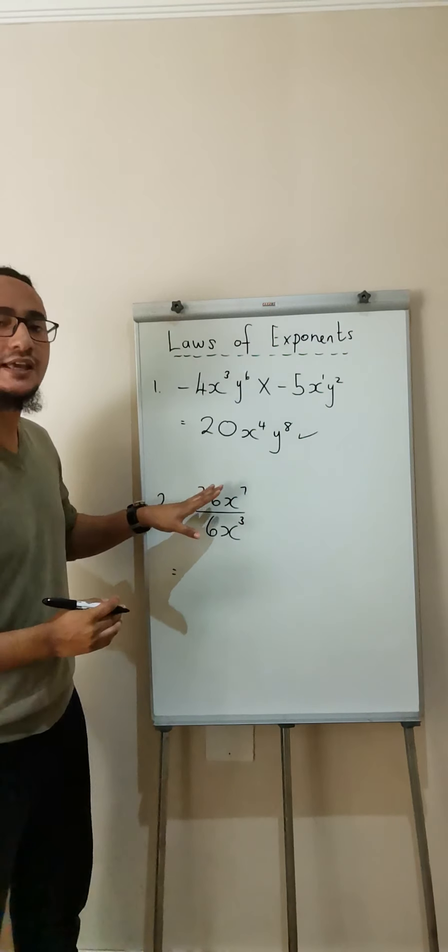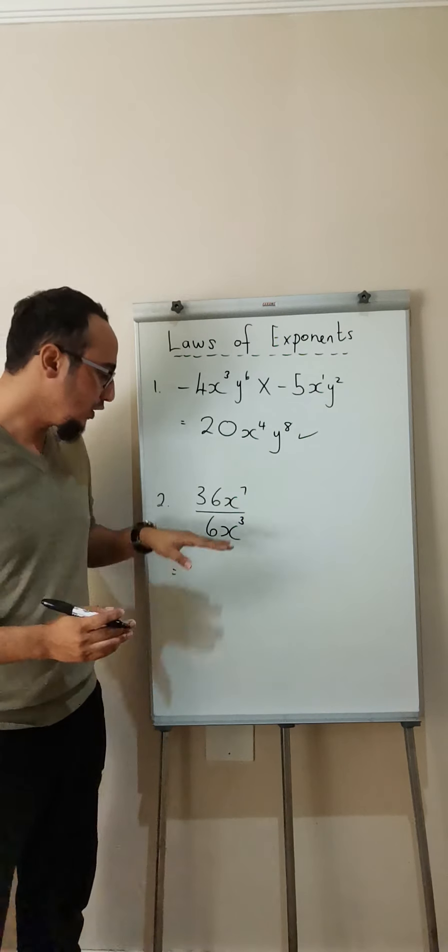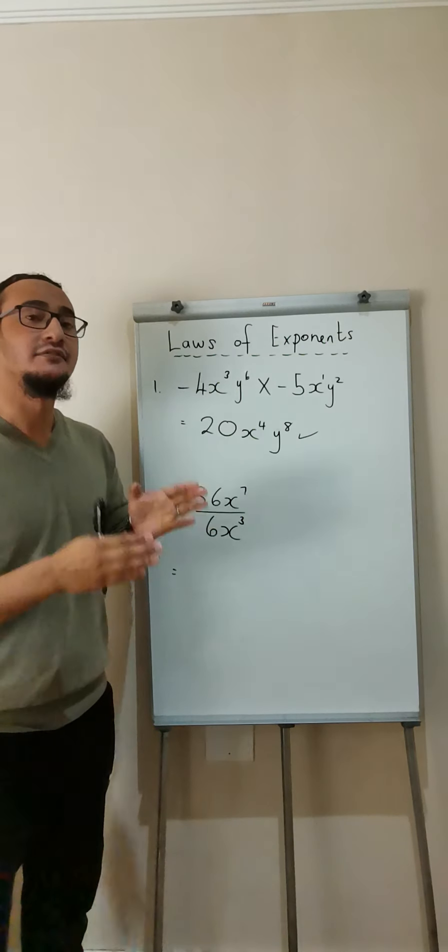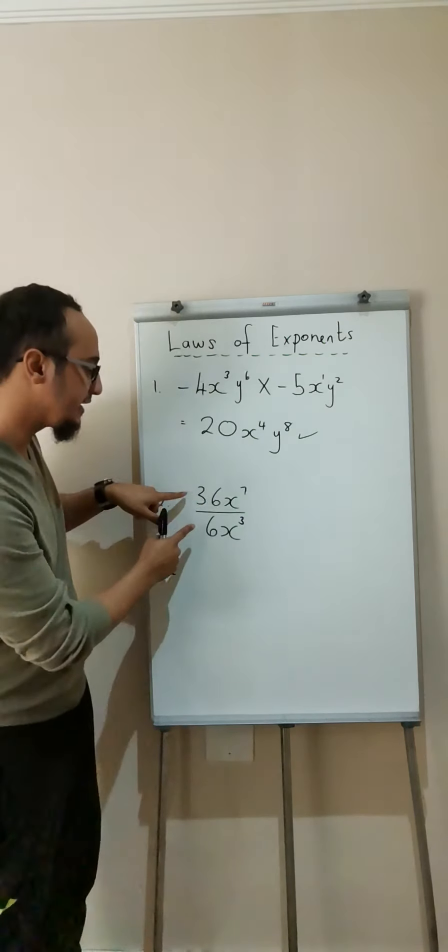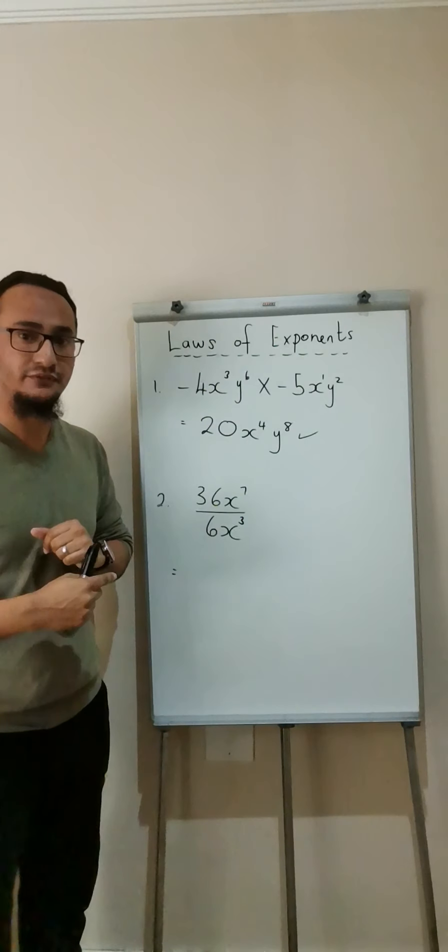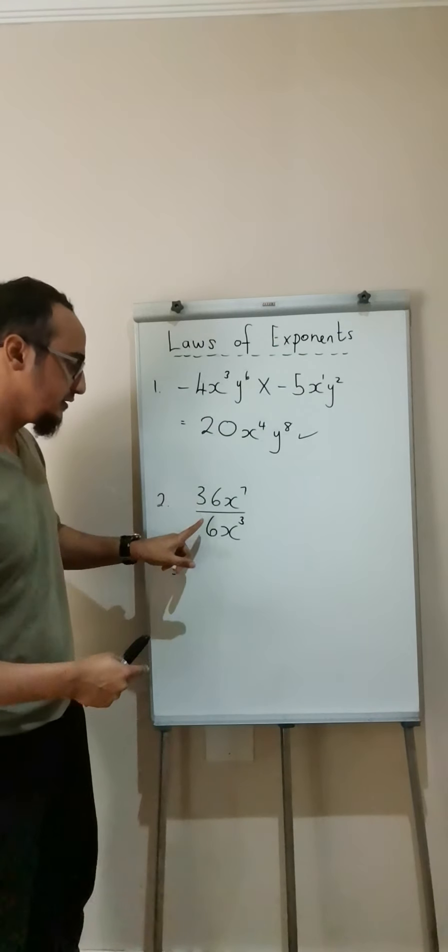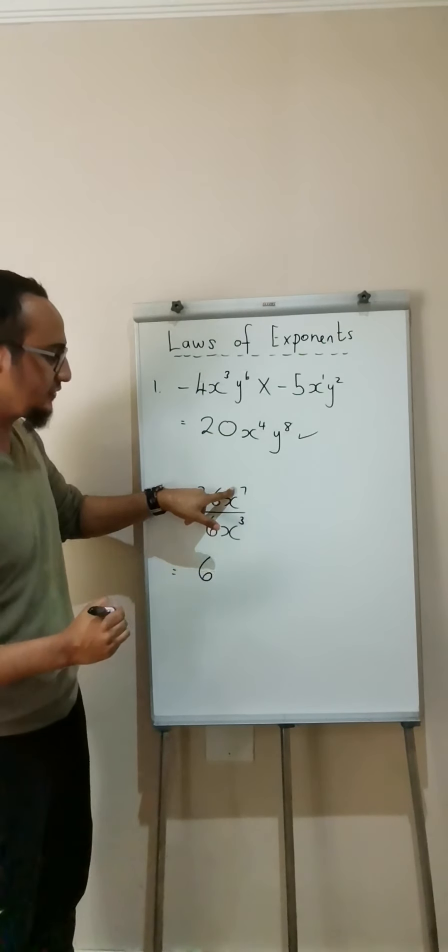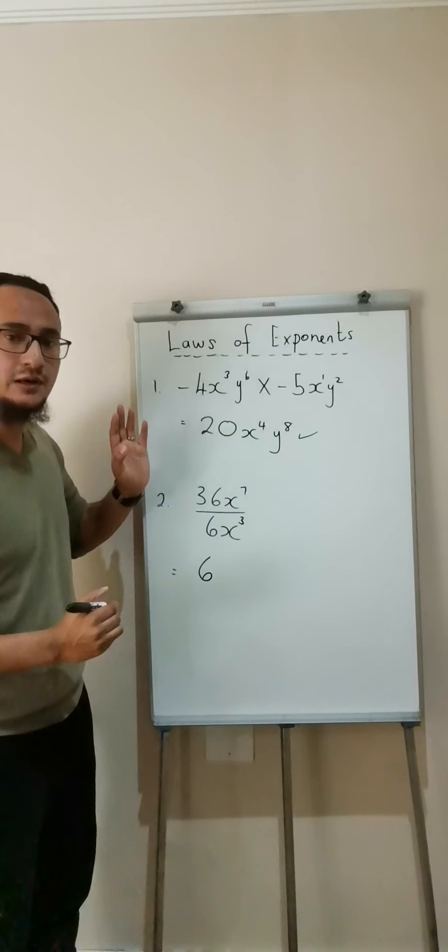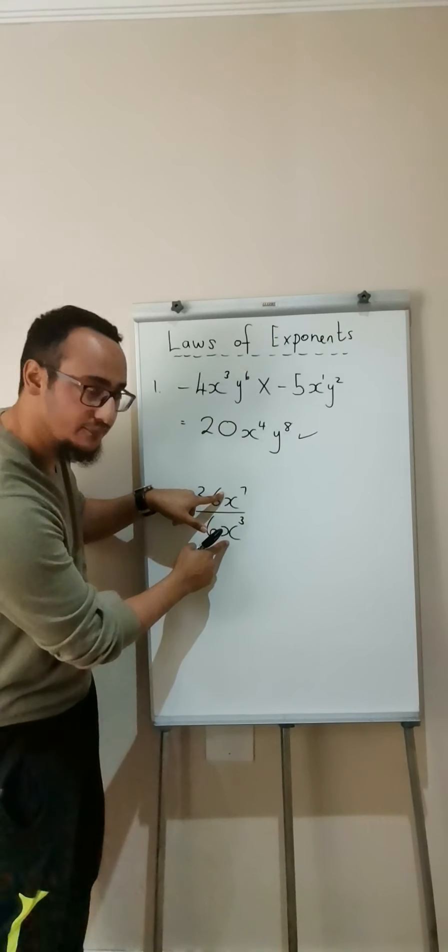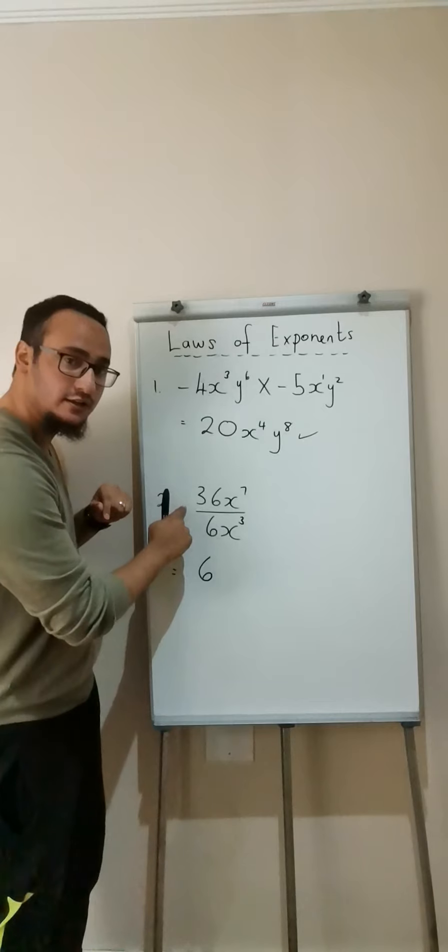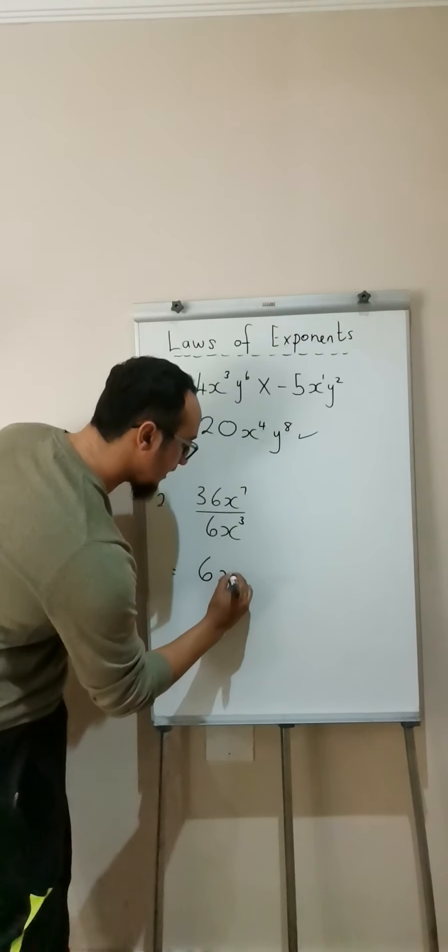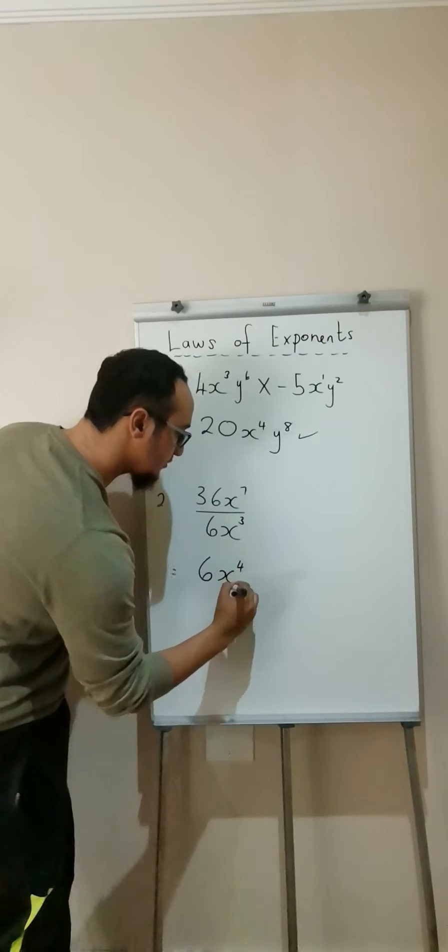Next example. 36 x to the power of 7 over or divided by 6 x to the power of 3. The first thing what happens, I divide my numbers or also known as my coefficients. 36 divided by 6 is equal to 6. 36 x to the power of 7 divided by x to the power of 3. Because it's the same base and I'm dividing, what happens to the exponents? They subtract. So 7 minus 3 is equal to 4.